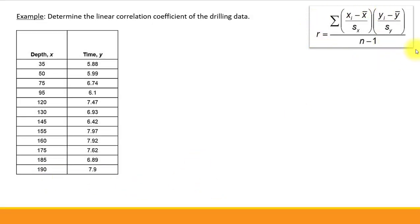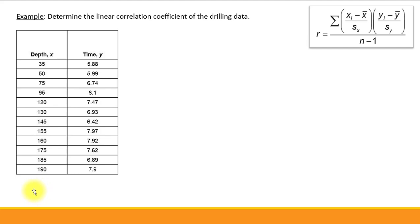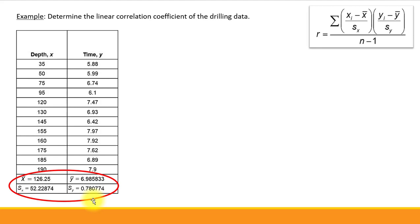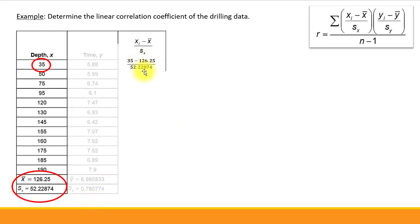Let's apply this formula. The process is somewhat time-consuming and tedious, so we'll skip most computations and focus on the order of steps. We have explanatory variable x and response variable y. Since mean and standard deviation are involved, we start by computing them. Here we've found the mean and standard deviation for both variables. Next, we compute the z-score for each value of the explanatory variable.